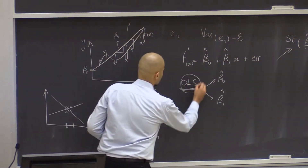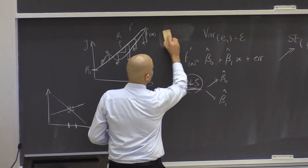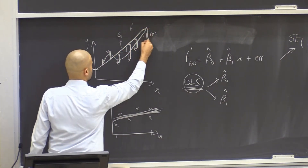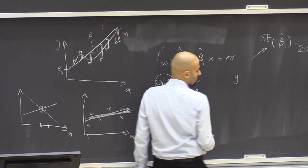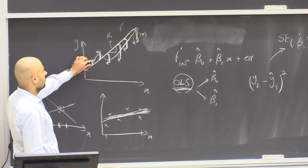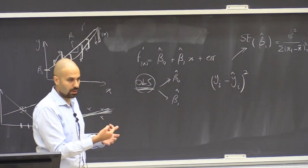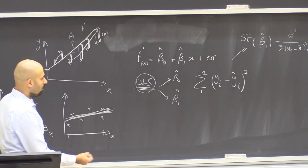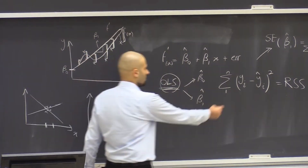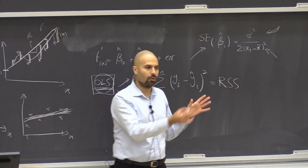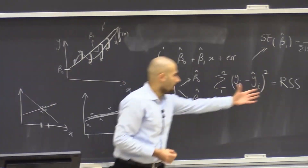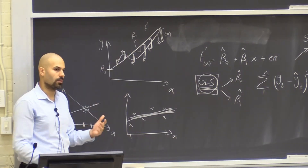In ordinary least squares, we are minimizing the distances between actual values of y for instance i and the prediction of y for instance i. We square these because sometimes the difference is positive and sometimes negative, so we don't want them to cancel. We take the sum from 1 to N. The sum of these squared residuals is called RSS, or residual sum of squares. OLS is a methodology that minimizes RSS over all possible values of beta one and beta zero. A statistical package calculates this for our historical data and minimizes it — it's essentially a minimization problem.